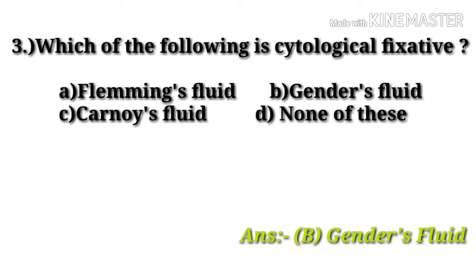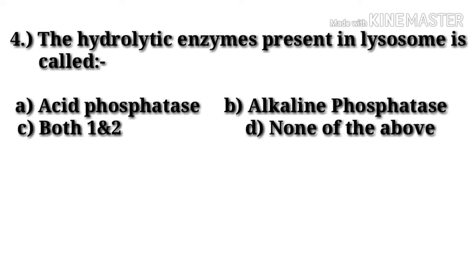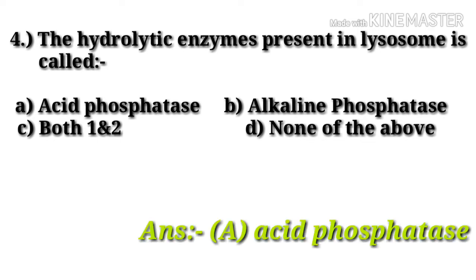Question number 4: the hydrolytic enzyme present in lysosomes is called — option A: acid phosphatase, option B: alkaline phosphatase, option C: lipase, option D: none of the above. The right answer is option A, acid phosphatase.